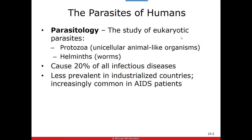A couple basic things with parasitology — it just means we're studying parasites. There are a lot of parasites out there, so we group them into protozoan parasites and helminths. The protozoans are small, single-celled eukaryotic organisms that cause lots of issues for us. The helminths are all the worms, which are the grossest of them all. Parasites cause about 20% of all infectious diseases. They are less prevalent in industrialized countries, but we are seeing more and more cases of parasitic infections, especially in those with weaker immune systems, including AIDS patients.